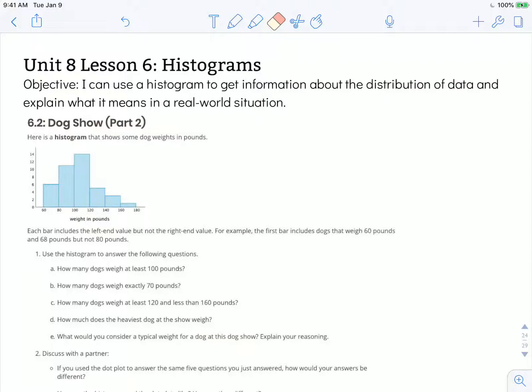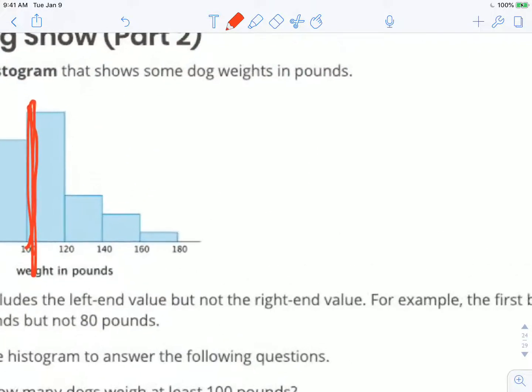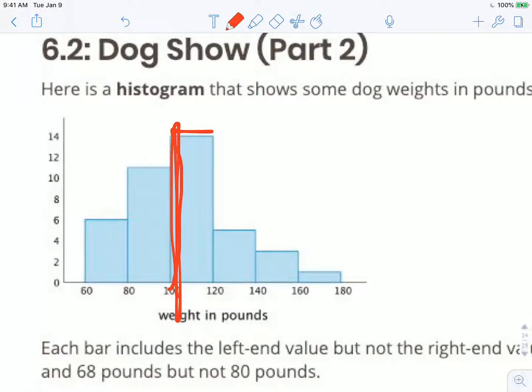Number one says use the histogram to answer the following questions. How many dogs weigh at least 100 pounds? So we're going to look right here. Remember that 100 pound mark starts on the left, doesn't include anything that was in the bar before it. So we've got total right here, let's zoom in and get a better look. We've got 14 here. And then this one right here is halfway between 4 and 6, so this must be 5 dogs because we can't have 5 and a half dogs, that wouldn't make sense.